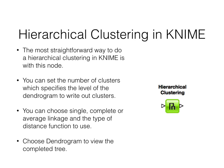Hierarchical clustering is straightforward in KNIME using the hierarchical clustering node. We can set the number of clusters, which specifies the level of the dendrogram to output. We can choose single link, complete link, or average link, and select the distance function. After running, there's an option to view the dendrogram to see what the tree looks like.